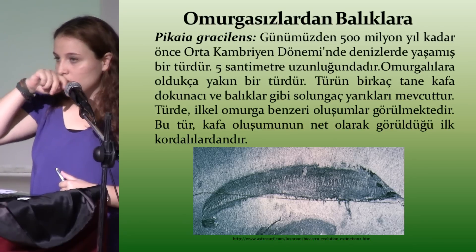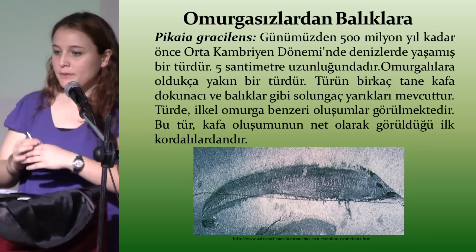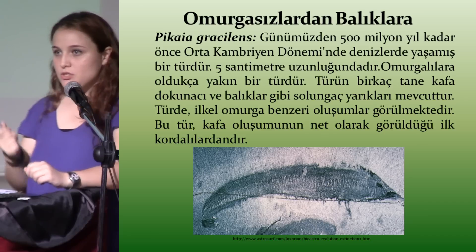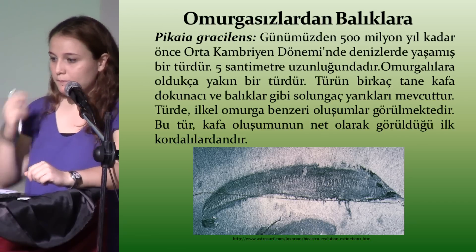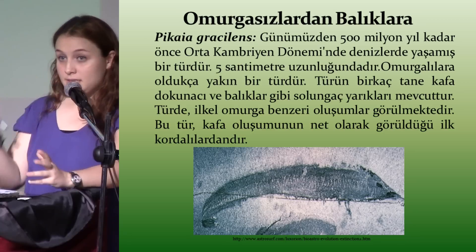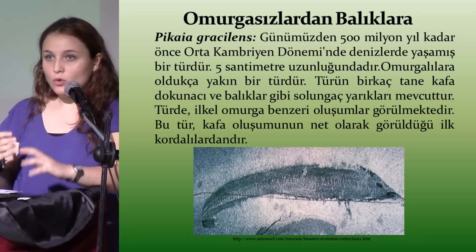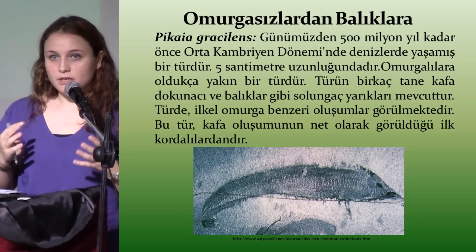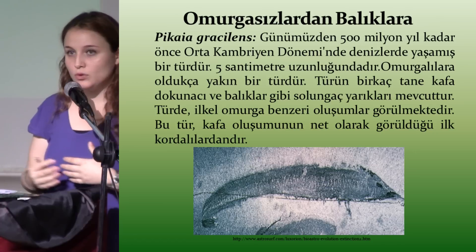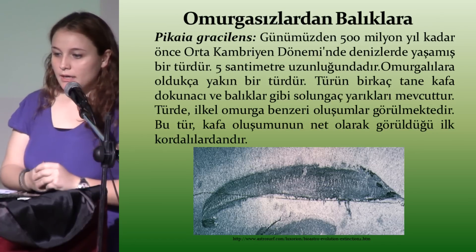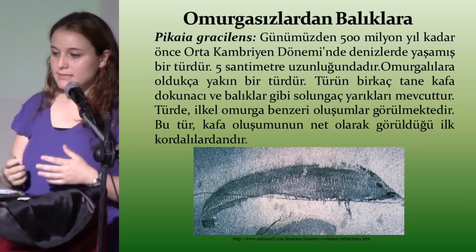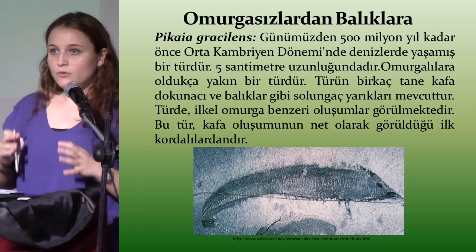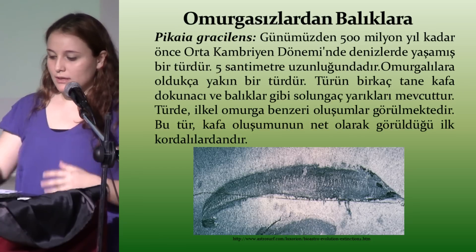Omurgasızlarda omurgalılara geçişte bir örnek var: Pikaia gracilens. Günümüzden 500 milyon yıl kadar önce yaşamış, 5 cm uzunluğunda ve omurgalılara oldukça yakın bir tür. Türün birkaç kafa dokunaçı ve balıklardakine benzer solungaç yapıları mevcut; ilk omurga benzeri oluşumlar görülüyor. Bu tür, korda oluşumunun net olarak görüldüğü ilk kordalılardan biridir.